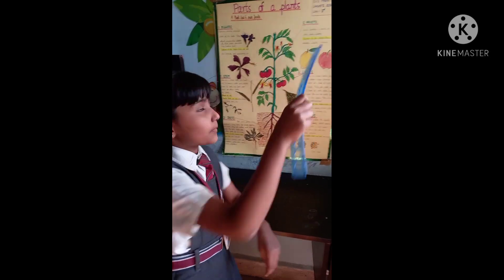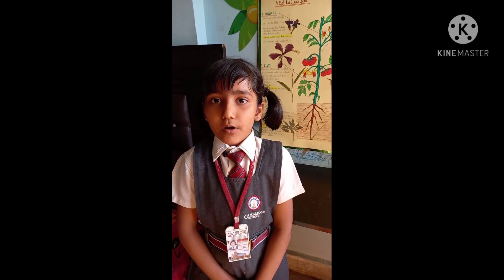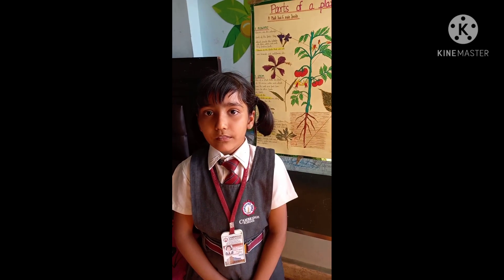The sixth part is fruits. Fruits provide a cover for seeds and they come from flowers. Fruits of the plants that we eat are apple, mango, orange, banana, etc. Thank you.